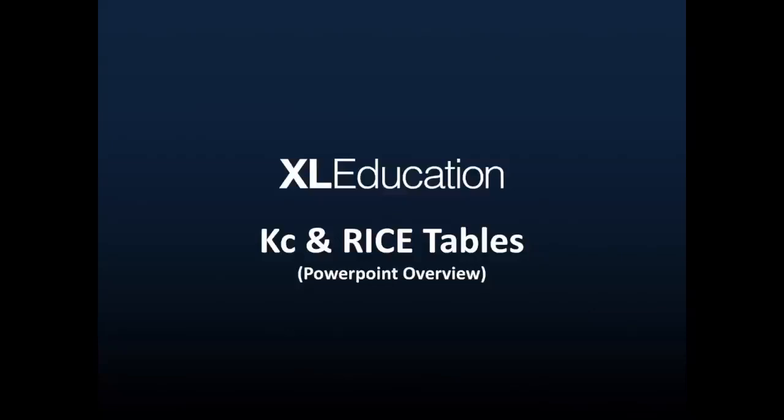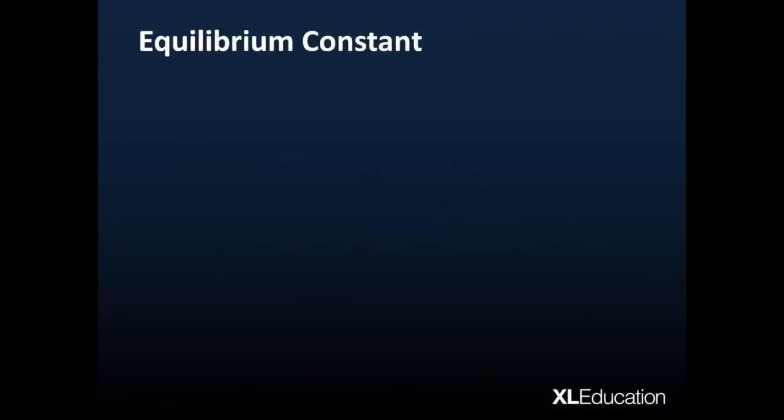Hey guys, we're going to look at a particular section of chemical equilibrium known as the equilibrium constant, Kc, and the method by which we calculate it, which is RICE tables. Nothing to do with basmati or jasmine or tastic, but it is genuinely a fantastic method of solving this particular problem. But puns and silly jokes aside, let's get into this.